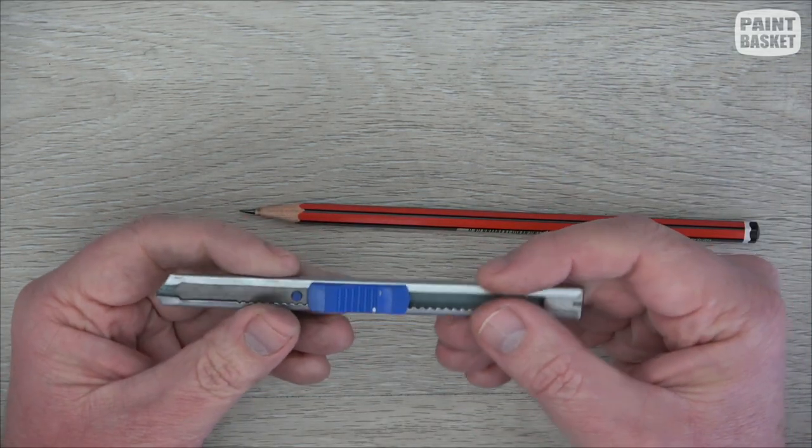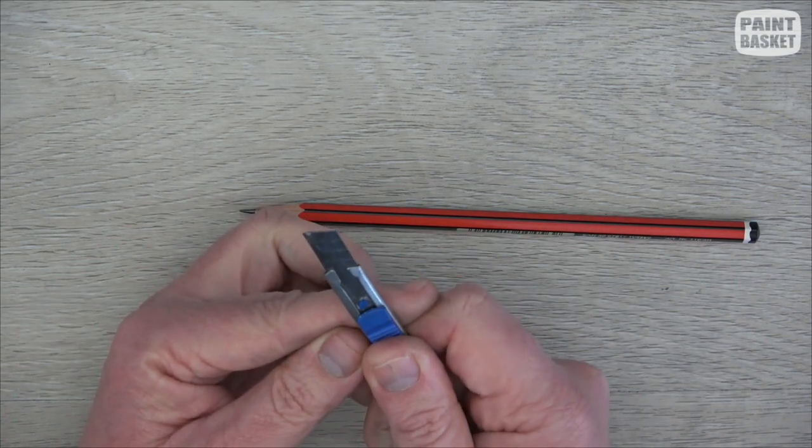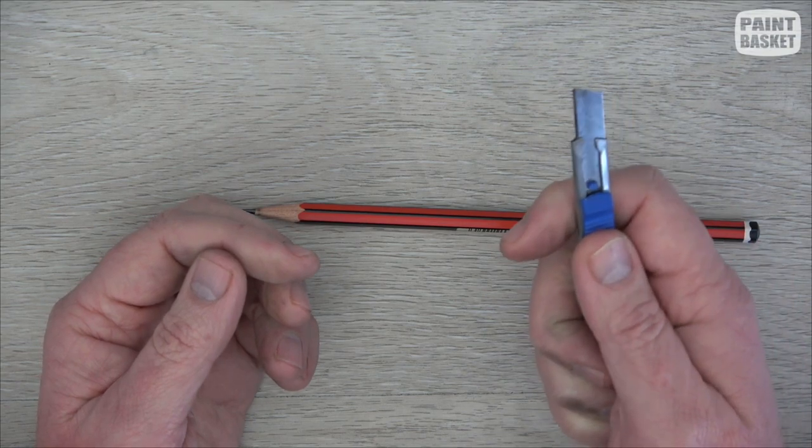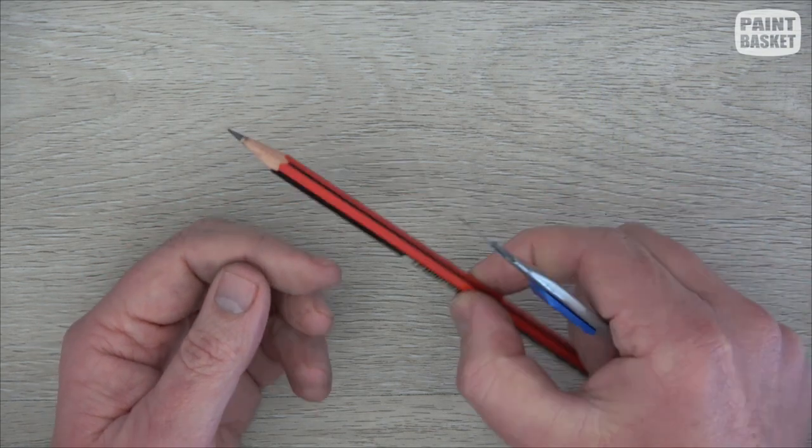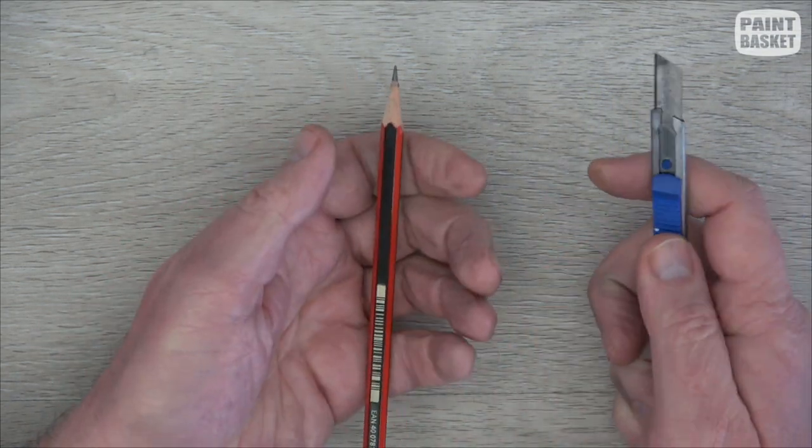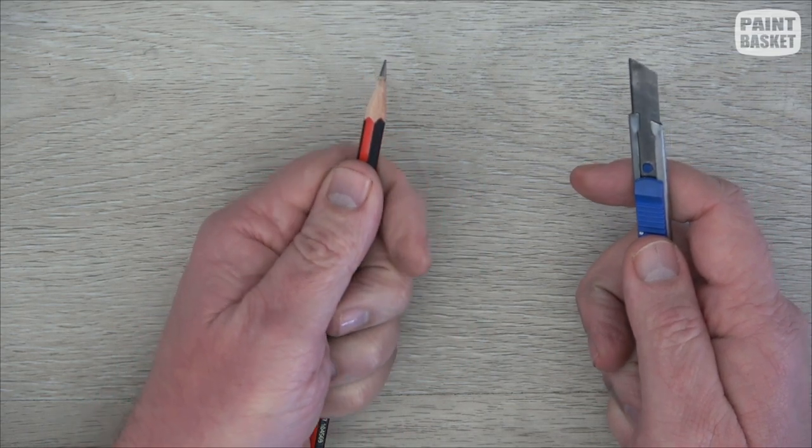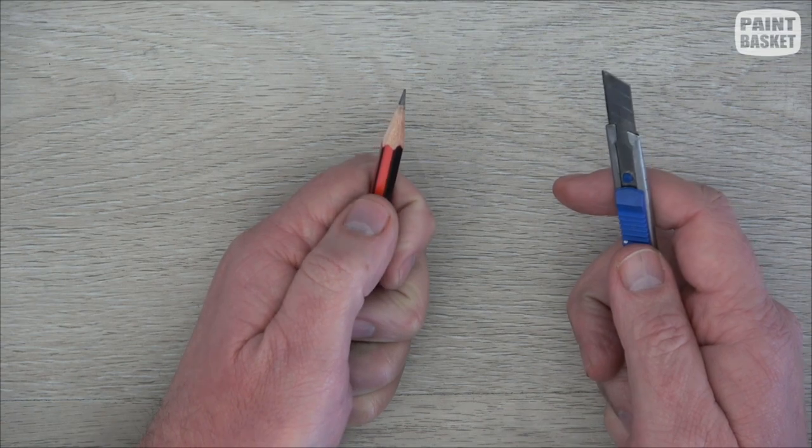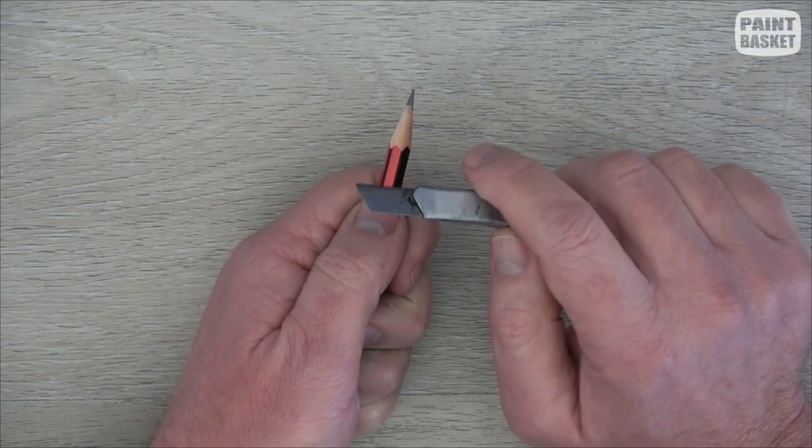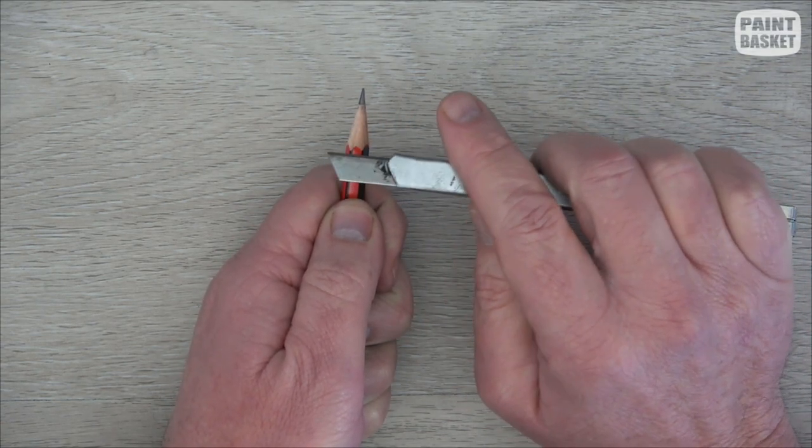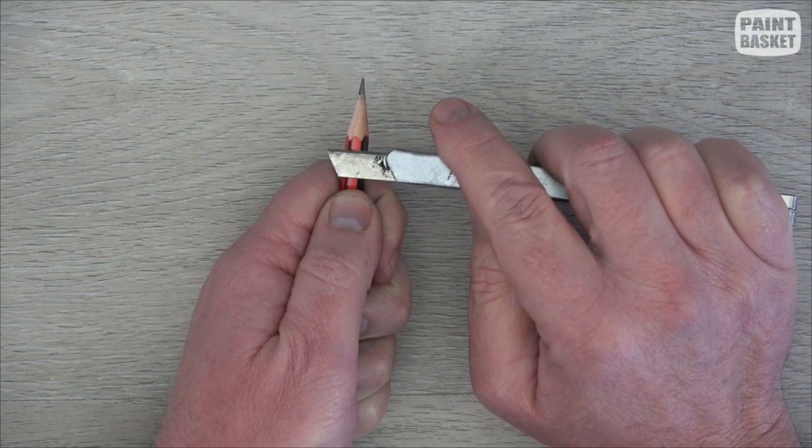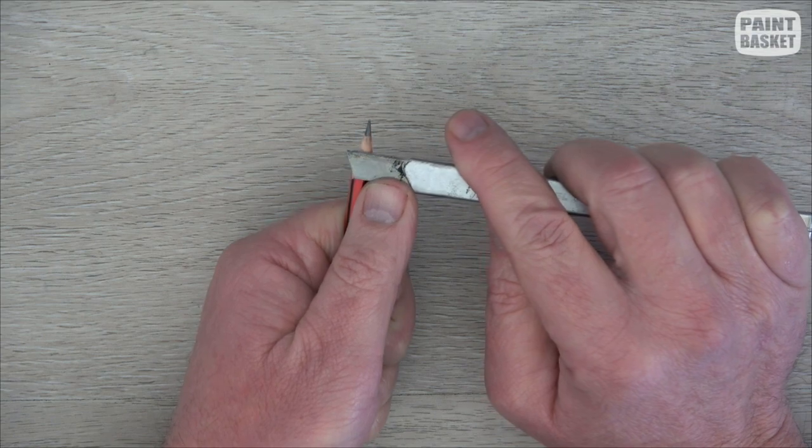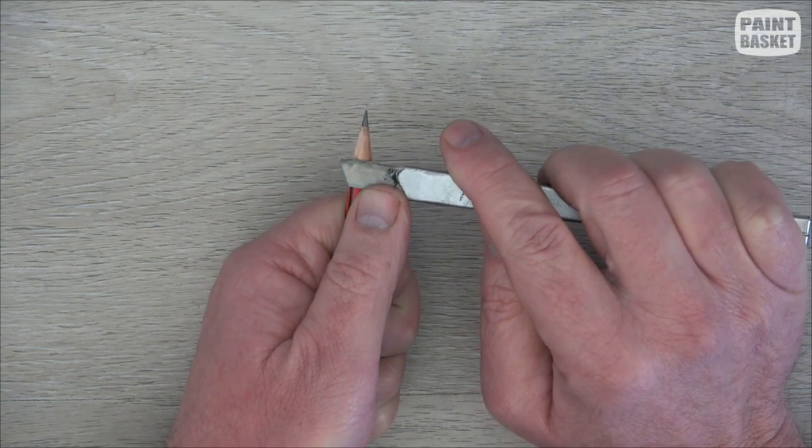So I take the craft knife and I open it. Now, I'm right-handed, so I'm going to hold the knife in my right hand. Then you hold the pencil on the inside of your hand like this, holding it so that your thumb is on top, because the method that we're going to use to cut is like this.